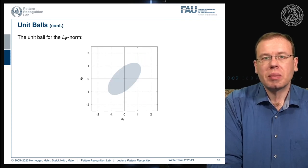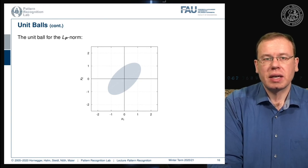An LP norm generally has the following form. If you apply a matrix, that's essentially a rotation and scaling on the major and minor axes of the resulting ellipse. The unit ball for an LP norm generally takes this form of ellipses.